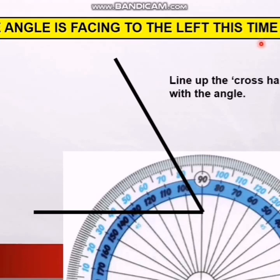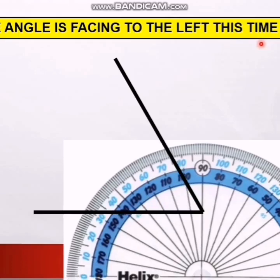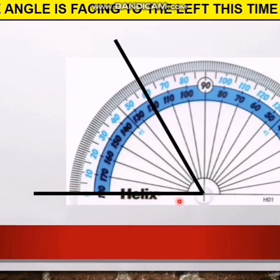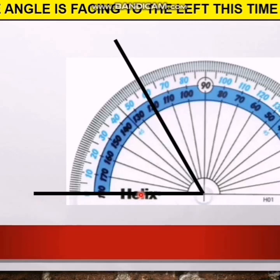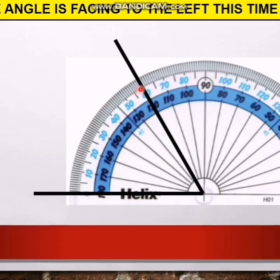Now the angle is facing to the left side. I align the protractor with the left baseline at the crosshairs. This time the baseline is on the zero of the outside numbers, so we use the outer scale: 0, 10, 20, 30, 40, 60. The other line is at 60, so the angle is 60 degrees. I hope you all understand today's topic. Thank you.